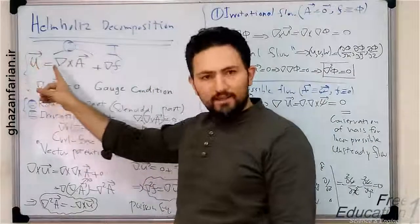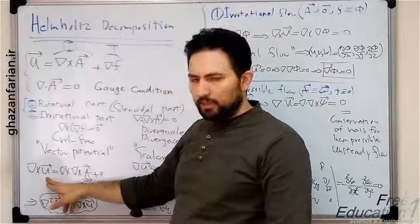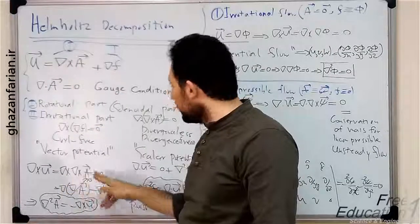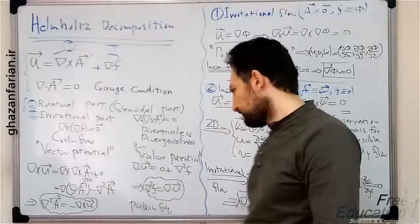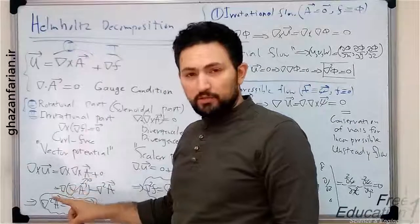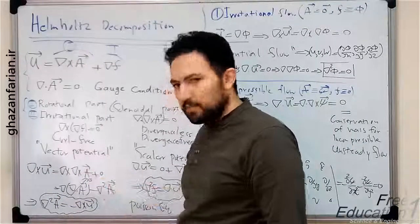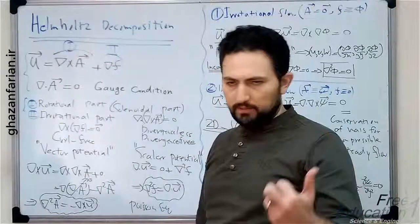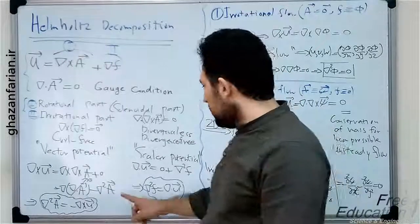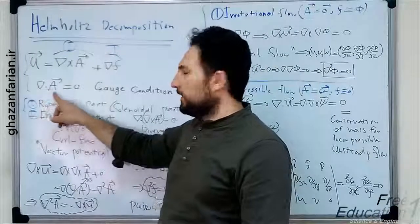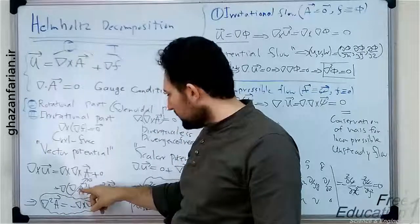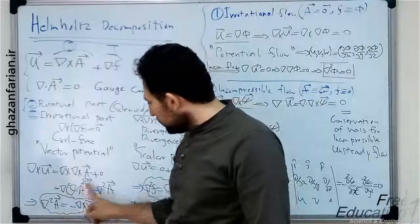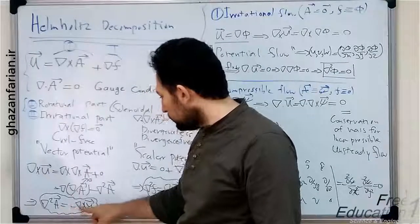Taking the curl of both sides of this equation, we have the curl of u equal to the curl of curl of A, plus zero, because the curl of the gradient of any scalar is zero. Using the vector identity, the curl of curl of any vector equals the gradient of divergence of that vector minus the Laplacian of that vector. Applying the gauge condition that vector A is divergence-free, the first term on the right-hand side vanishes, and this equation reduces to: the Laplacian of A equals minus the curl of u.